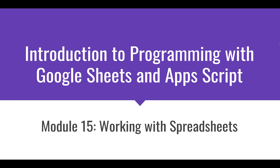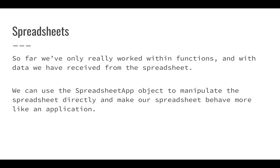Now that we know about objects, we can do some interesting things with them. We can use the objects built into Apps Script and Google Sheets to actually manipulate those spreadsheets. So far we've only worked with our spreadsheet using custom functions — we've passed in values, done something with them, and returned results. But using the spreadsheet object, we can manipulate the spreadsheet directly, making it behave more like an application and do some really interesting things.